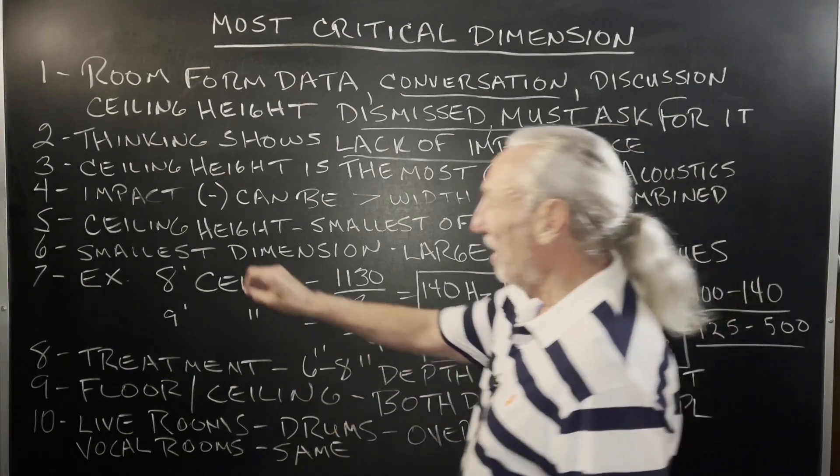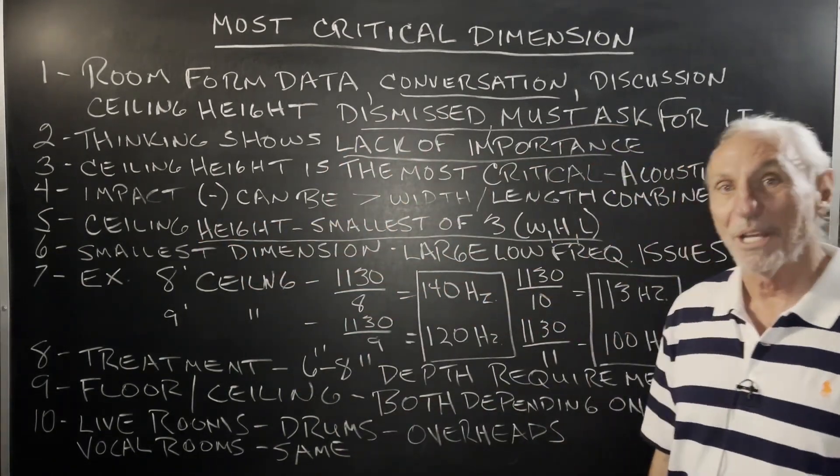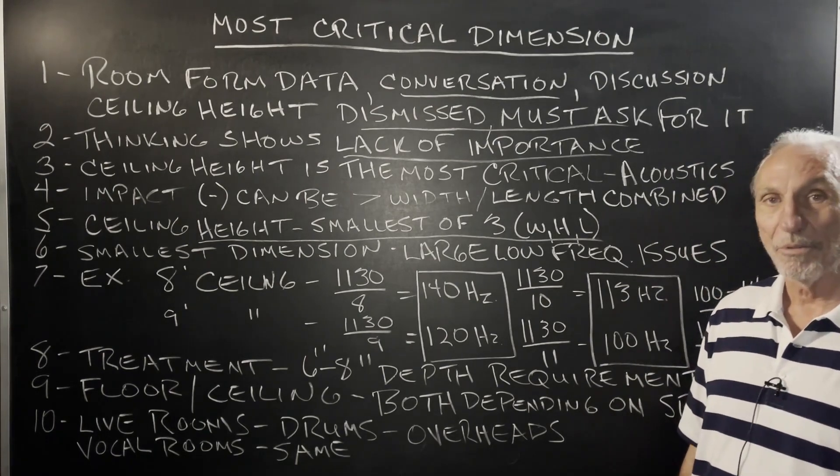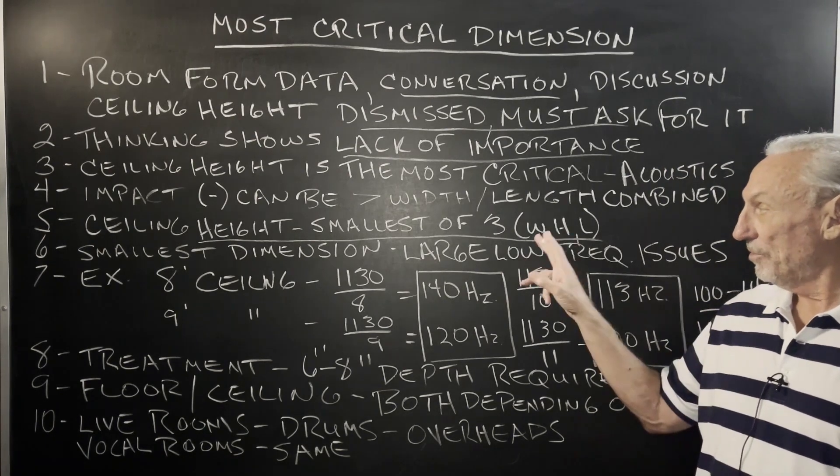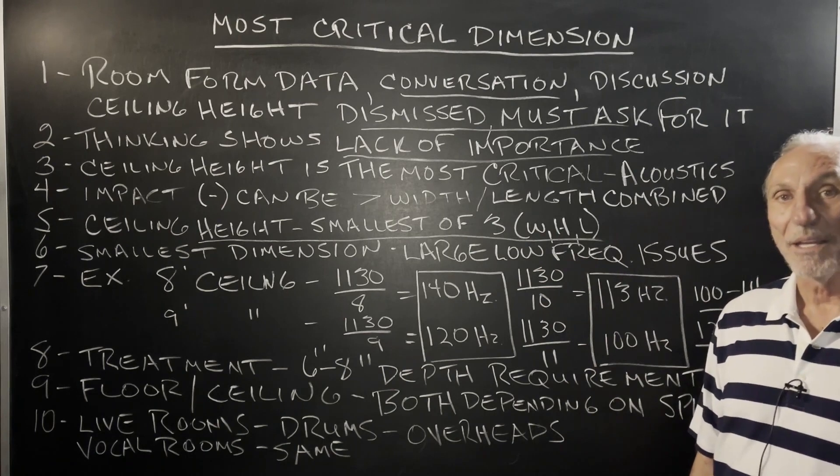It's always the smallest dimension. Not always, but 95% of the time, it's the smallest of the three. If it's eight foot, we always have more width than eight foot. We definitely have more length than eight foot.